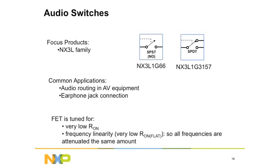However, sometimes you need to switch something very specific, like an audio signal. Audio signals are not very strong, so you need very low resistance so you don't lose the audio signal going through the switch. So the FET is tuned for very low resistance and tuned so that the audio frequencies can pass through without being attenuated — without losing the signal as you go through.